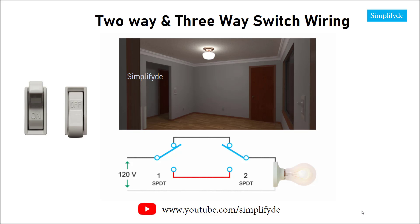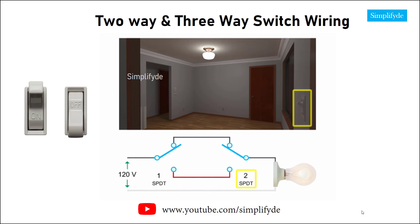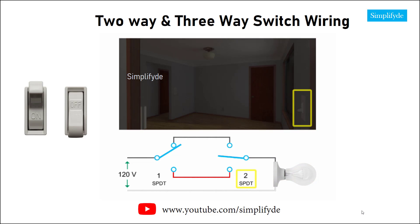In this first switch position, both switches one and two are up. The current flows through and lights the bulb. If you place switch two in the down position while switch one remains in the up position, the circuit is broken and current does not flow to the light bulb.